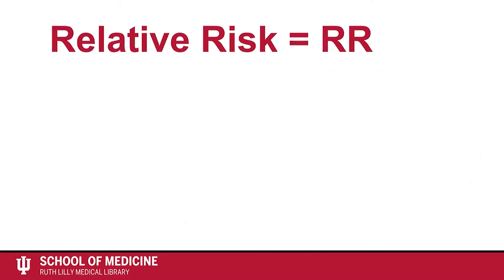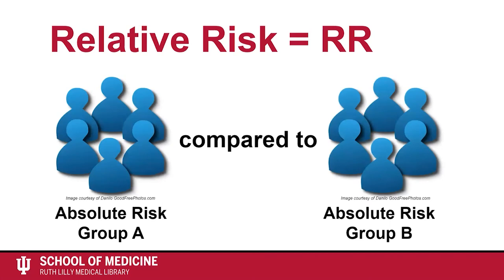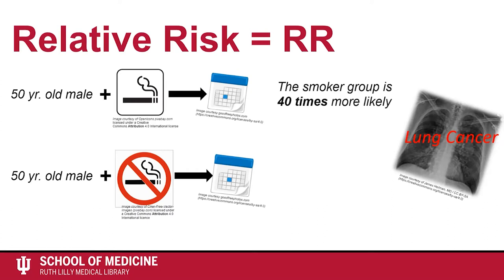Relative risk, sometimes known as risk ratio, compares the absolute risk in two different groups. For example, let's compare the risk for lung cancer in two different groups. A group of 50 year old smokers is 40 times more likely than a group of 50 year old non-smokers to develop lung cancer this year. In other words, the smoker group is 40 times more likely than the non-smoker group to develop lung cancer. The relative risk is 40.